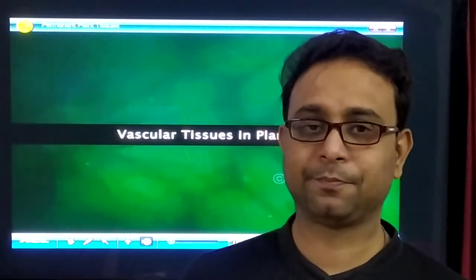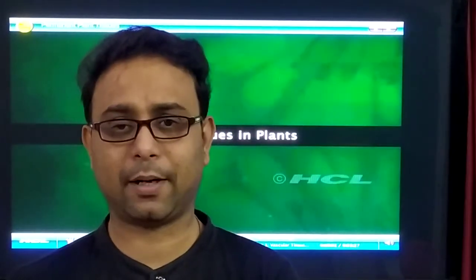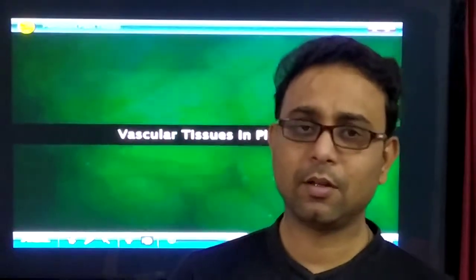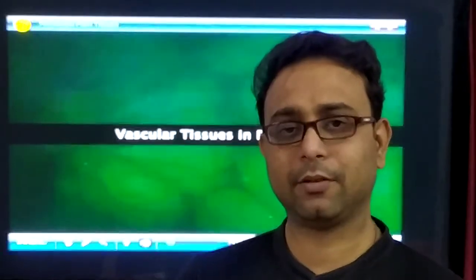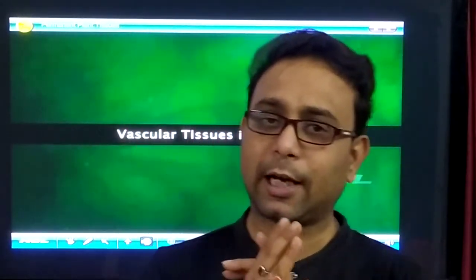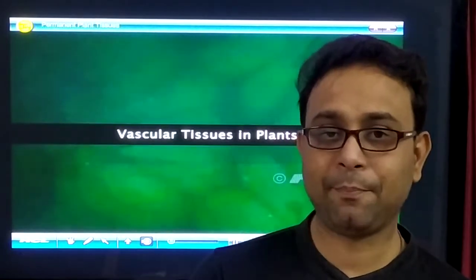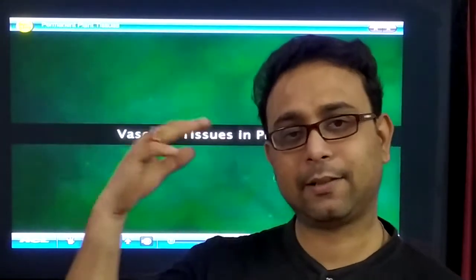Simple permanent tissue has three types: parenchyma, collenchyma, and sclerenchyma. But in the complex permanent tissue, they have different types of cells in their structure, so they are called complex. We have two types of complex permanent tissue — one is xylem and another is phloem.